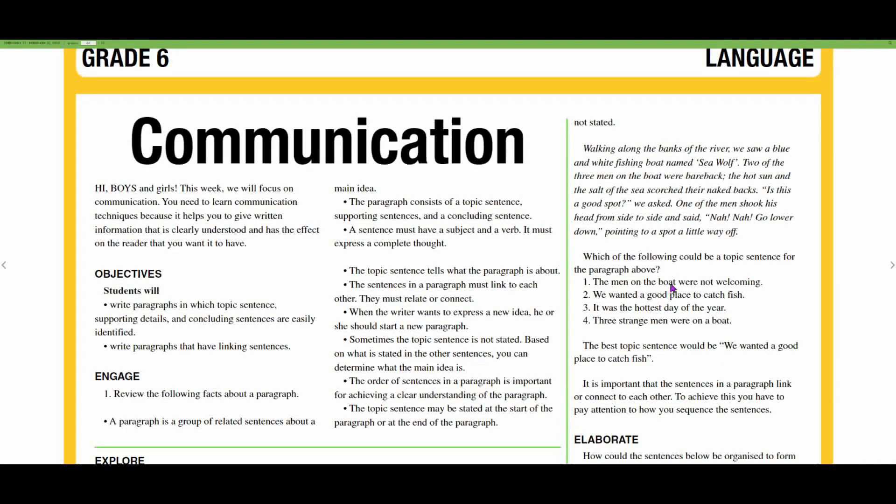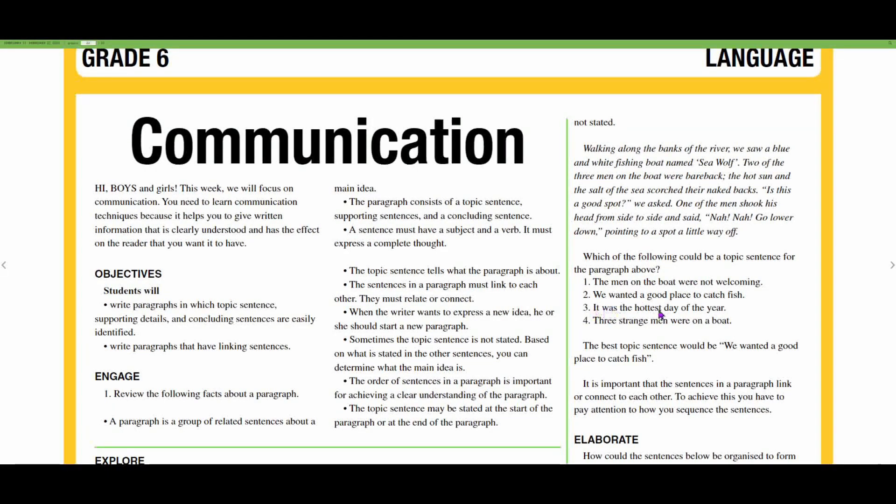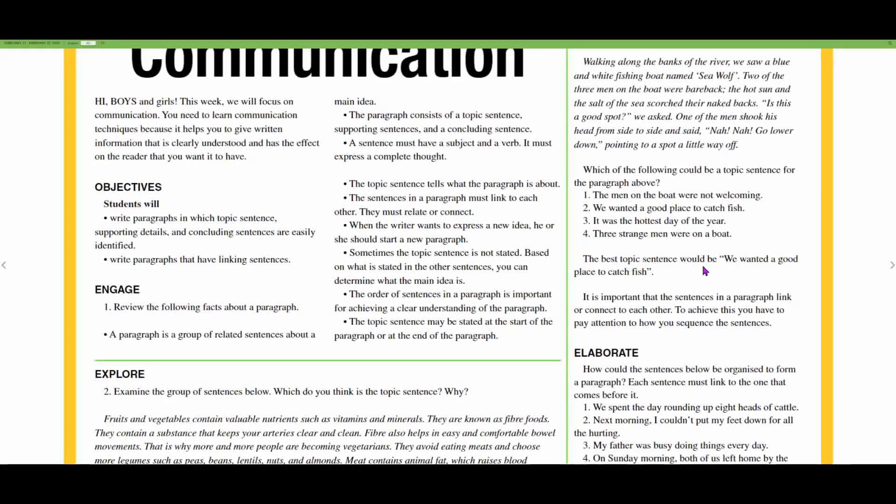Which of the following could be a topic sentence for the paragraph above? One: the men on the boat were not welcoming. Two: we wanted a good place to fish. Three: the hottest day of the year. Four: three strange men were on a boat. And of course, based on the details, we would want this one that says 'we wanted a good place to catch fish.' The best topic sentence would be 'we wanted a good place to catch fish.'